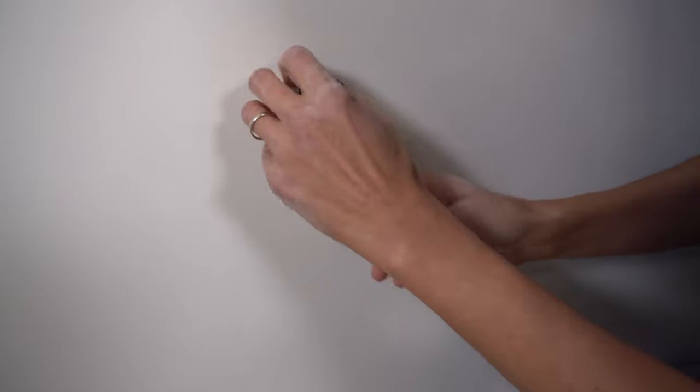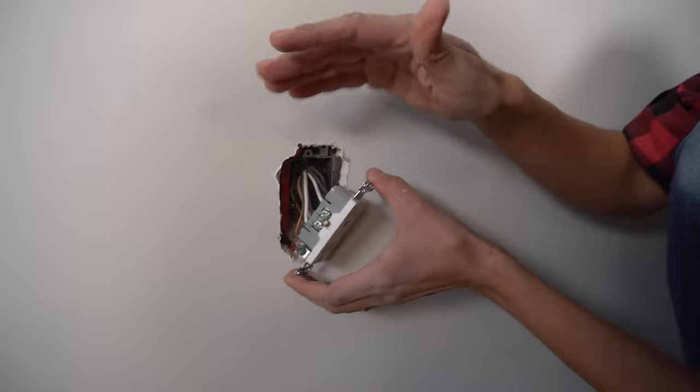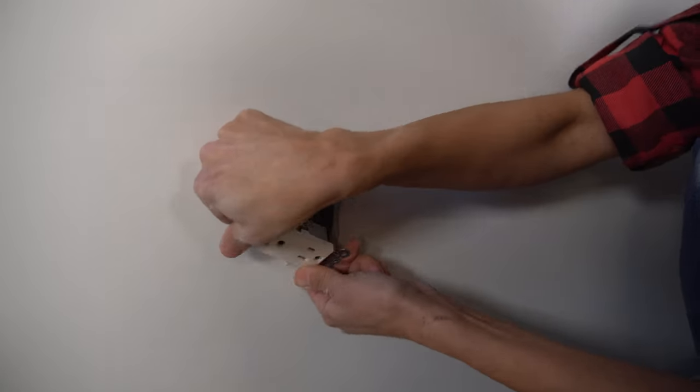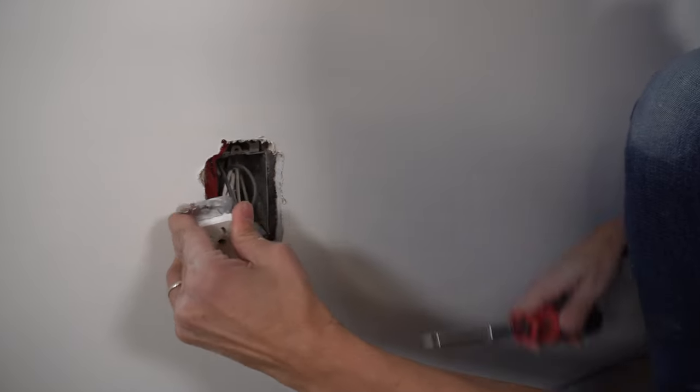So the first thing you're going to do is remove your outlet. Oh my gosh, this is tight. Now that our power is off, we're going to pull out the outlet and take it apart here.